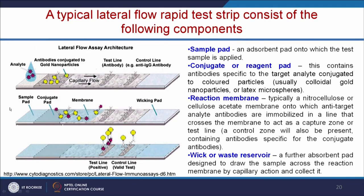Let us see the lateral flow assay in detail. It contains four pads: sample pad, conjugate pad, membrane, and wicking pad. In the sample pad we add the sample. The conjugate pad contains antibodies conjugated to gold nanoparticles or latex microspheres. The sample and antibody move in one direction using capillary force. In the test line you have an antibody specific for your antigen, and in the control line you have anti-IgG antibody, which is specific for your gold nanoparticle-conjugated antibody. When you add the sample, the antigen binds with the antibody in the conjugate pad and moves toward the test line. At the test line, the antigen is sandwiched between two antibodies. All unbound antibody moves to the control line, where an antibody-antibody reaction occurs.